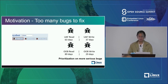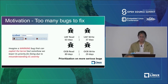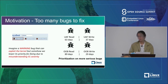Therefore, we believe correctly understanding the severity of a bug is necessary and important. Imagine a warning bug that can compromise the kernel, but people mislabel its severity and don't patch it for a long time — the consequences could be terrible if a bad actor managed to exploit it.